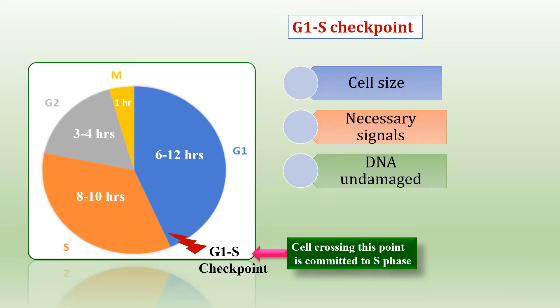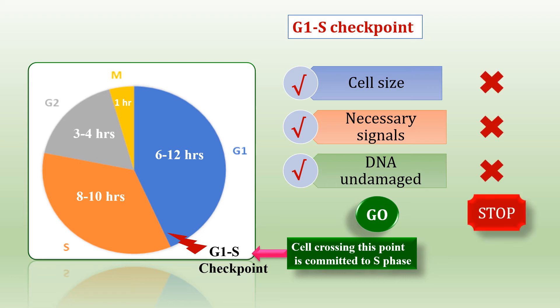At the G1/S checkpoint, if the cell size is proper, necessary signals are present, and DNA is undamaged, then the cell is allowed to go from G1 phase to S phase. But if conditions are not proper, the cell is arrested in G1 phase, DNA damage is repaired, and if it cannot be repaired, the cell undergoes apoptosis.